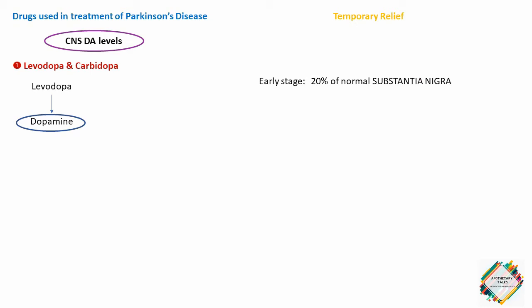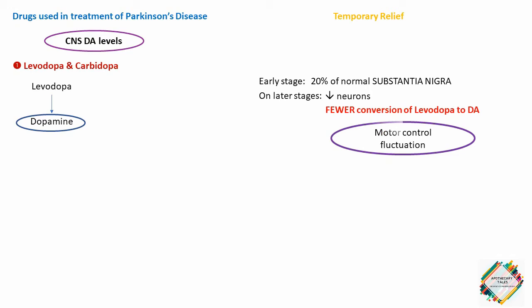Unfortunately, as time progresses the number of neurons decreases and fewer cells are capable of converting the exogenously administered levodopa to dopamine, and consequently there is a fluctuation in motor control. Relief provided by levodopa is usually symptomatic and lasts only while the drug is present in the body. The effects of levodopa on the CNS can be greatly enhanced by co-administering carbidopa, a dopamine decarboxylase inhibitor that does not cross the blood-brain barrier.